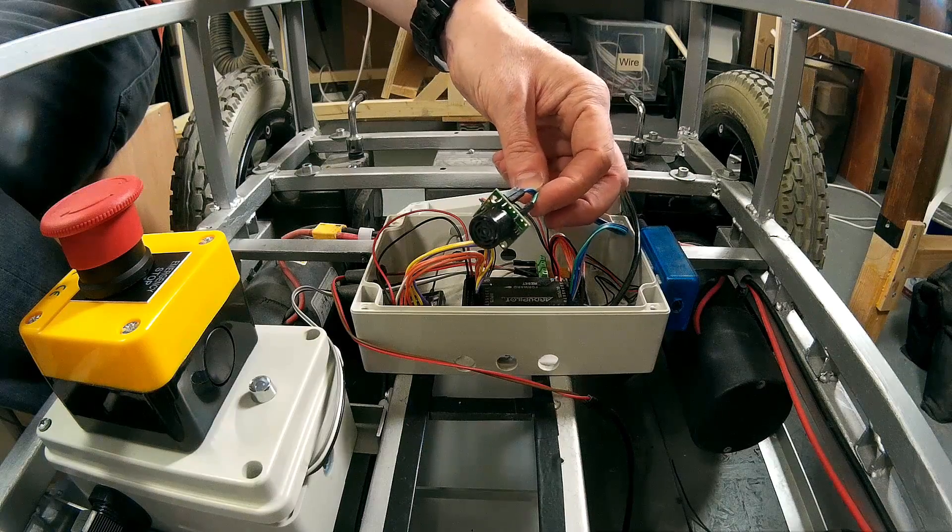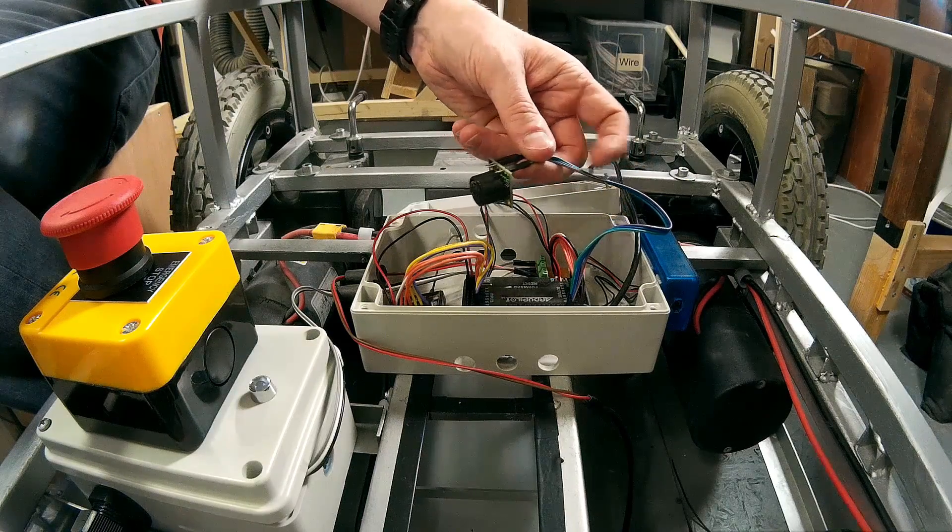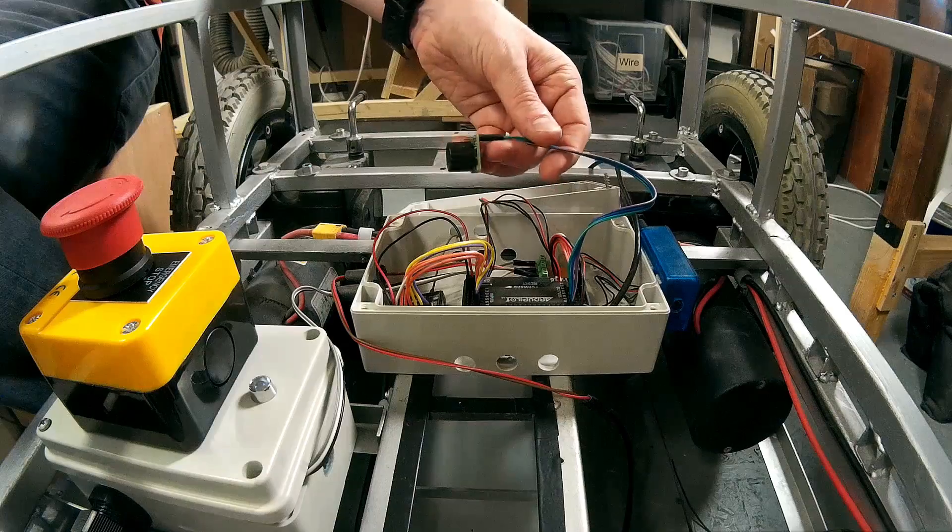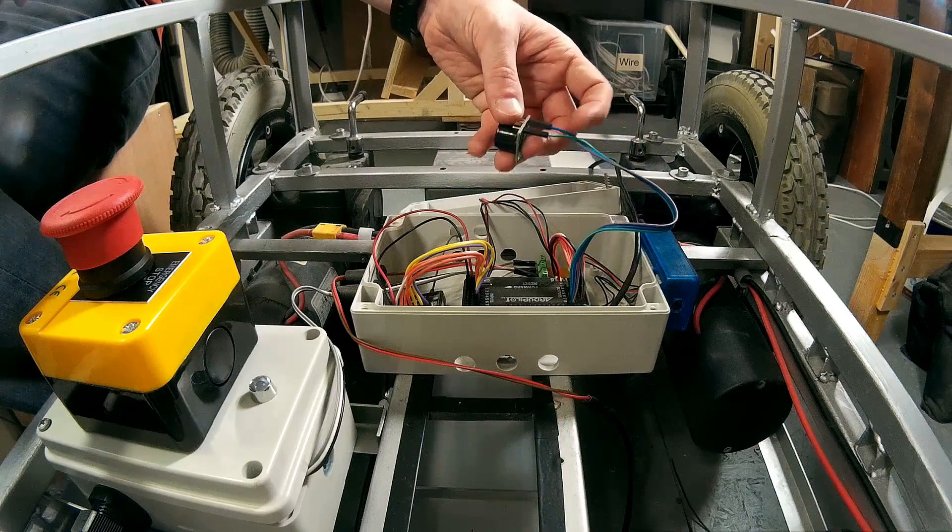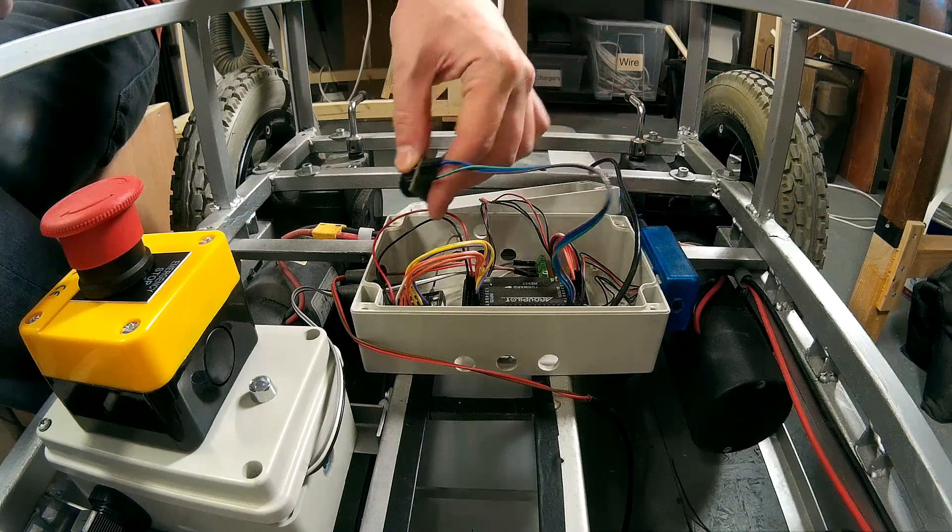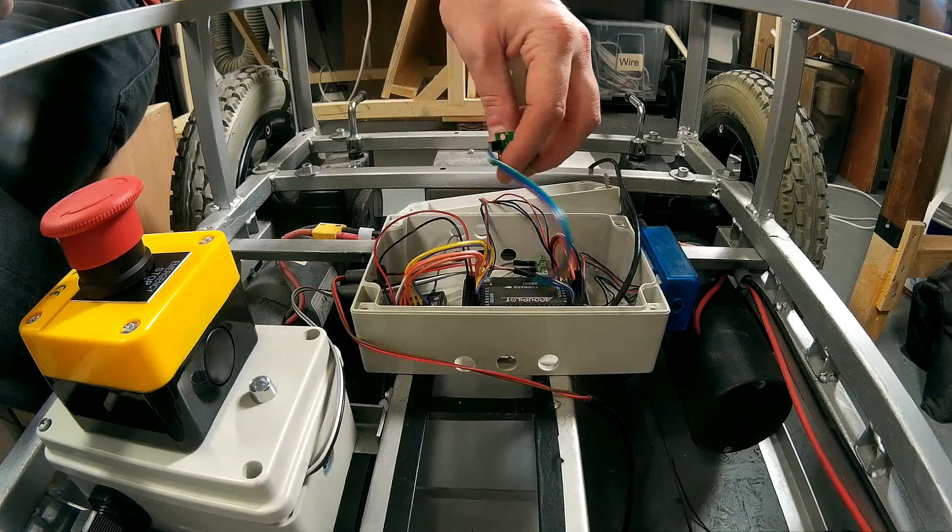For planes and quadcopters, it's used for altitude, accurate altitude detection for landings, obstacle avoidance. In this case it is used just for obstacle avoidance, so you can have them mounted at the front looking for obstructions.